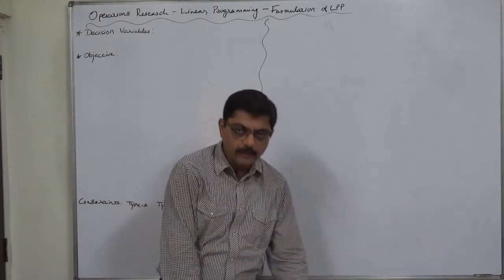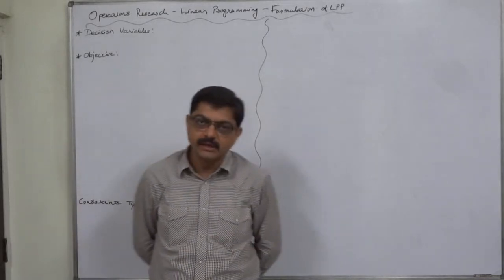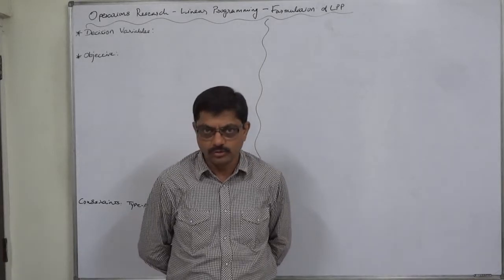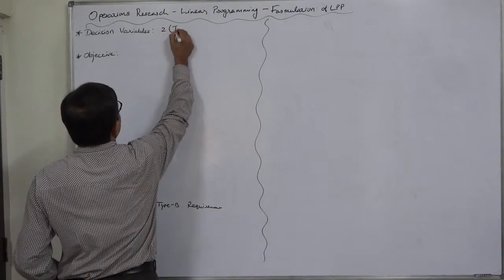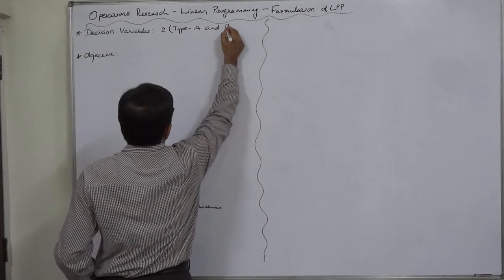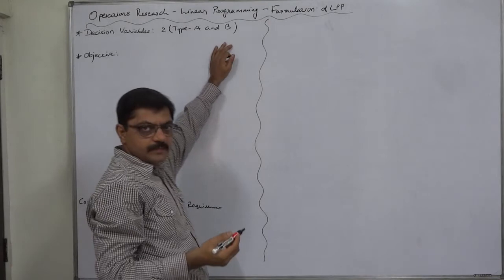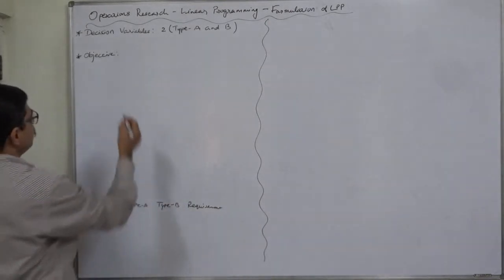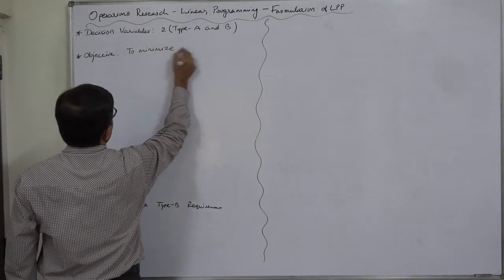To minimize cost, we need to determine the minimum number of inspectors required. The decision variables are: x1 = number of Type A inspectors assigned, and x2 = number of Type B inspectors assigned. The objective is to minimize the daily inspection cost.